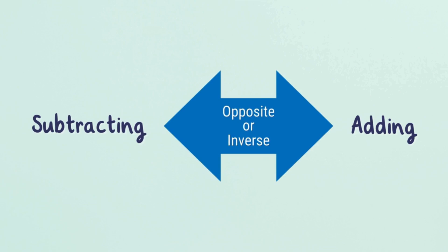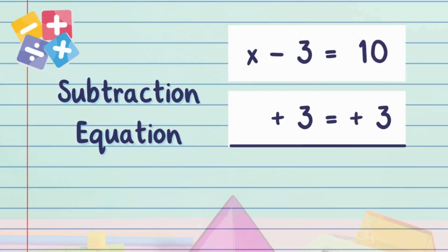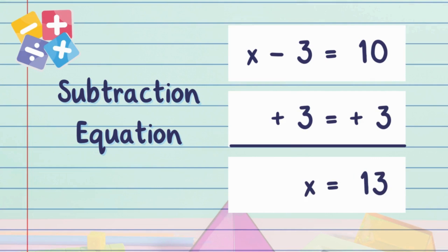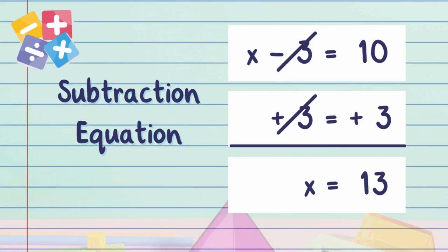What's the opposite of subtracting 3? That's right—the opposite of subtracting 3 is adding 3. So let's add 3 to both sides of the equation. Just like that, we've got x = 13.